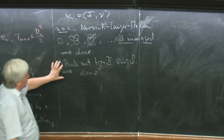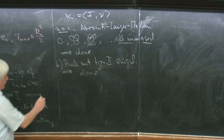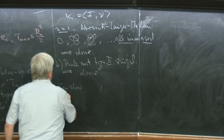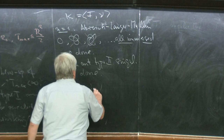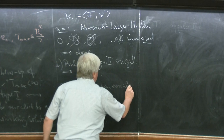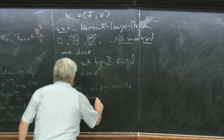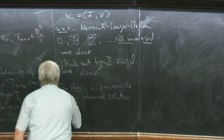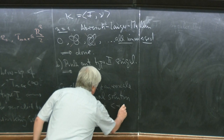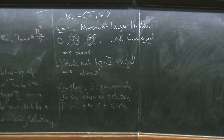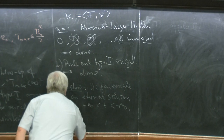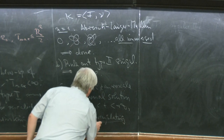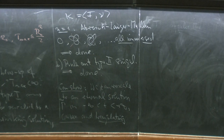The thing remaining is to rule out the type 2 singularity. It turns out, as I already showed you the picture, one can show — and I'm not going to do this part — that we can rescale to an eternal solution: some gamma_infinity on minus infinity less than t less than plus infinity. This is convex and translating. This part takes a little bit of time, but I skipped that part.